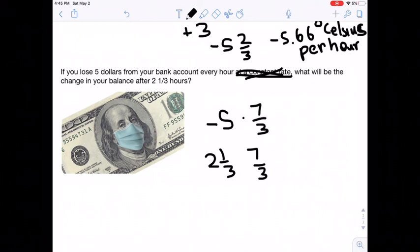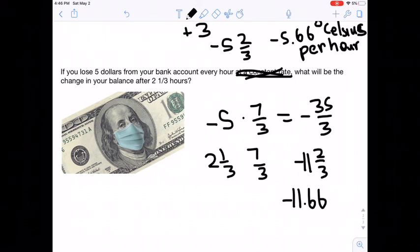And then we multiply it, and we know it's a negative multiply it by positive, so the answer must be negative, and then we multiply it, we get 35 thirds, which is also equal to negative 11 and two thirds, or negative 11.66. So this is the change in your balance after two and one third hours.